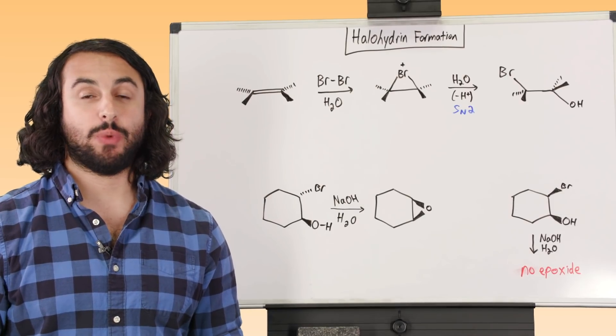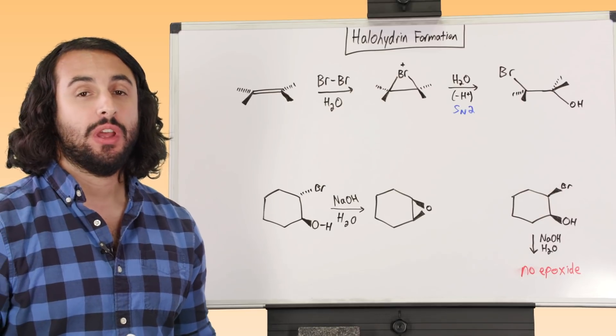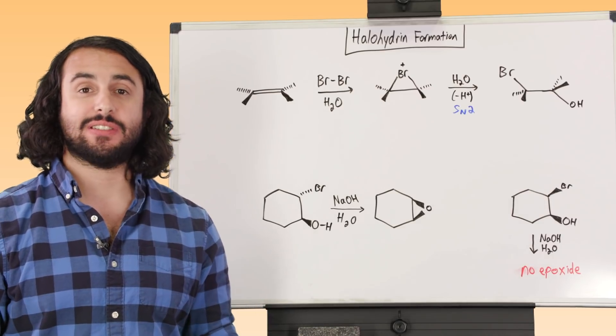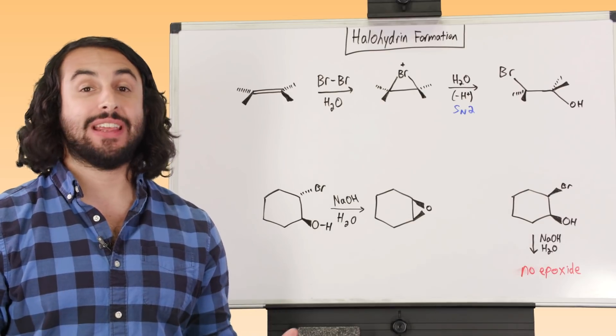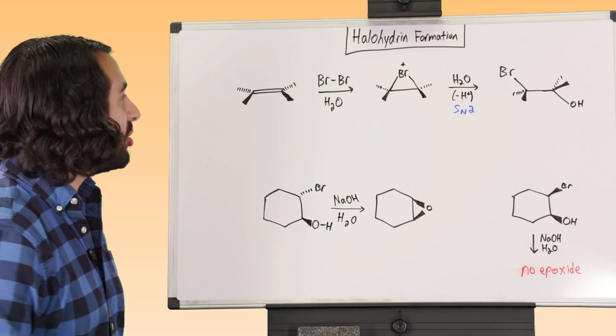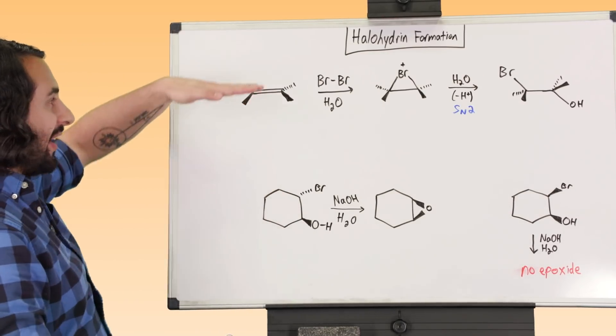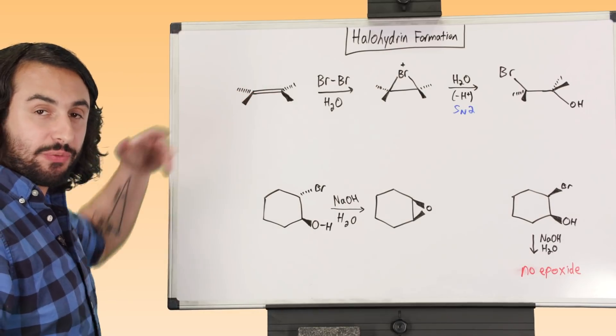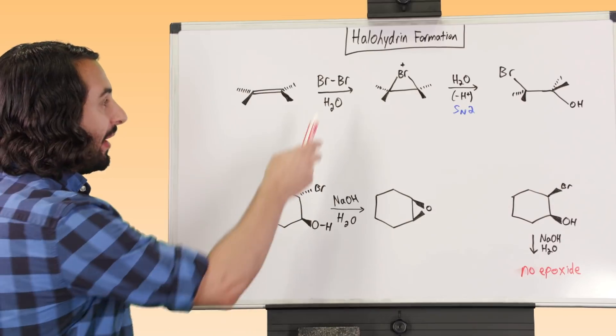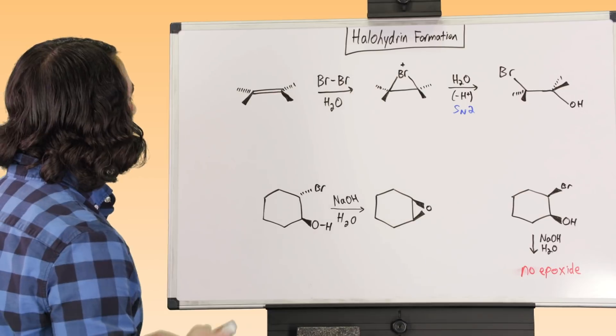So one addition reaction that we've learned is dihalogenation, and we saw how we can do an anti-addition where we put two halogens, like two bromines, onto an alkene, and they will add in anti-fashion. Let's look at a slight modification of this. Let's say we've got this alkene, and now we're looking at this alkene edge on, just for clarity of stereochemistry. And let's say that we've got bromine.